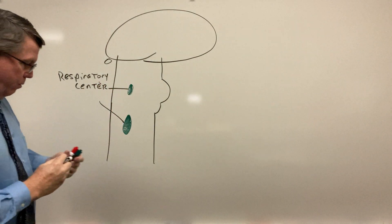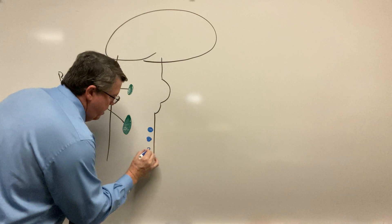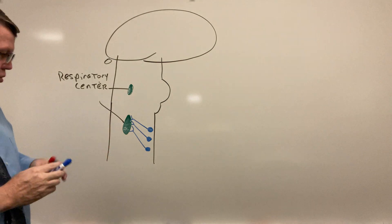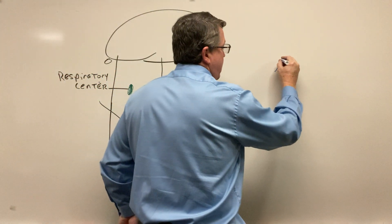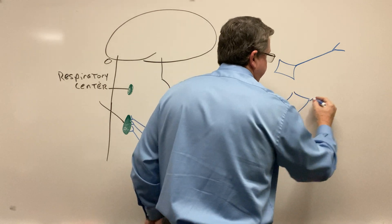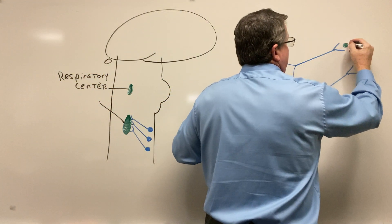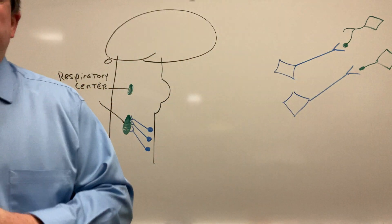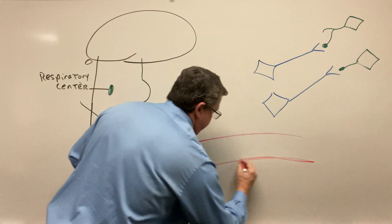Now the other thing we have in here is our chemoreceptors. The chemoreceptors are going to be nerves that are going to basically send signals to our respiratory center. I'm going to draw my chemoreceptor over here — there's the part that's going to go to my respiratory center. I'm going to draw my respiratory center here as well. Down here we're going to draw our blood — a capillary — and remember you have capillaries that are going to be all over.